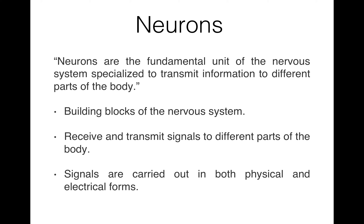The nervous system contains two types of cells: neurons and neuroglial cells. Neurons are the cells that receive and transmit signals, and the neuroglial cells are the support system for the neurons — they protect and nourish the neuron. Neurons are the fundamental unit of the nervous system, specialized to transmit information to different parts of the body. Neurons are the building blocks of the nervous system.